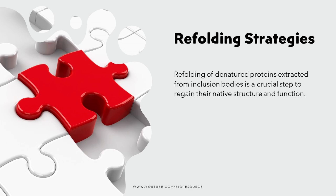Proteins isolated from inclusion bodies are often in disarray — they need to regain their original form through a process called refolding. There are different strategies for refolding, including gradual dilution, on-column refolding during purification, and intermittent batch refolding. It's like protein origami with a twist.